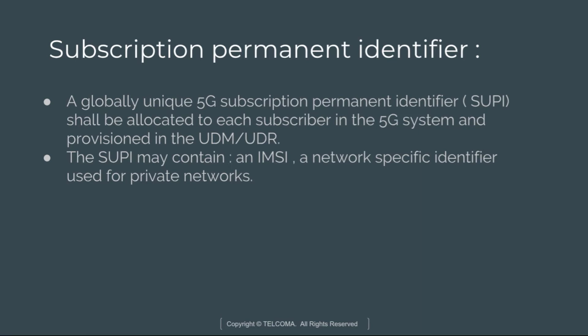The first identifier is the Subscription Permanent Identifier, or SUPI. This is a globally unique 5G subscription permanent identifier which shall be allocated to each subscriber in the 5G system and provisioned in UDM-UDR. The SUPI is used only inside the 3GPP system.